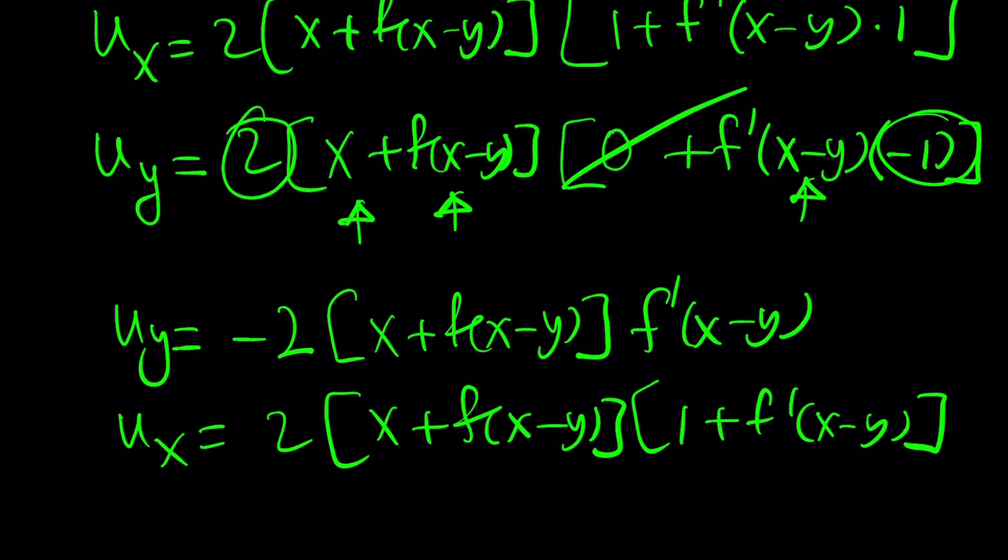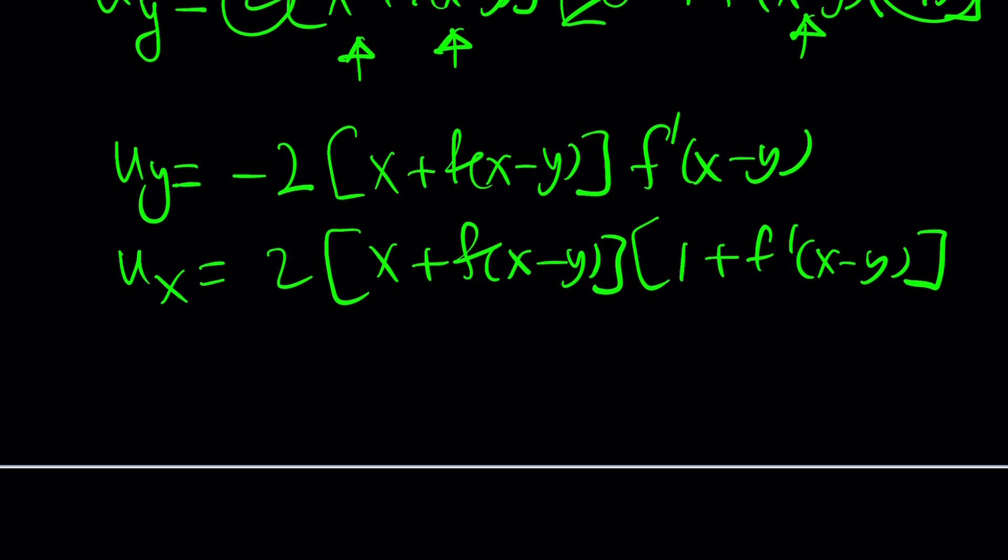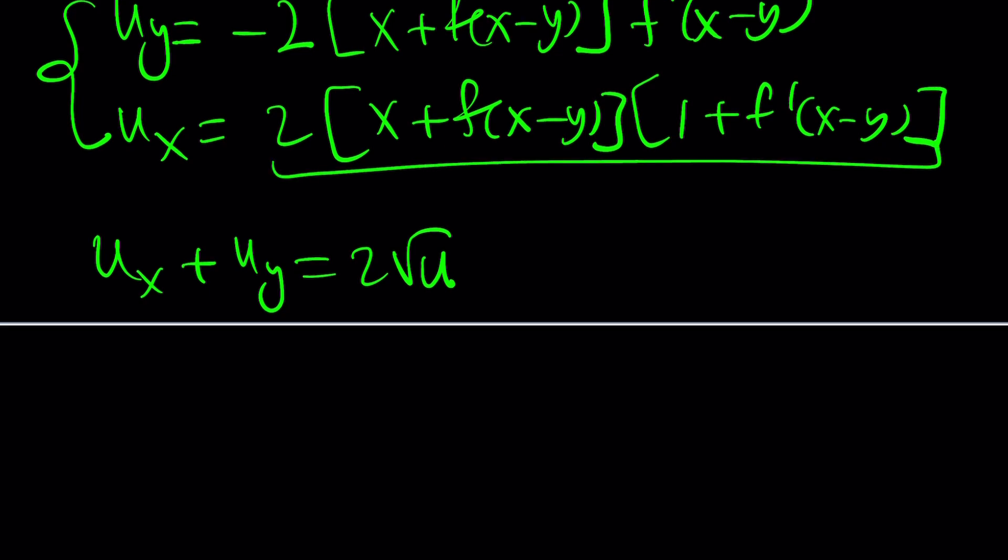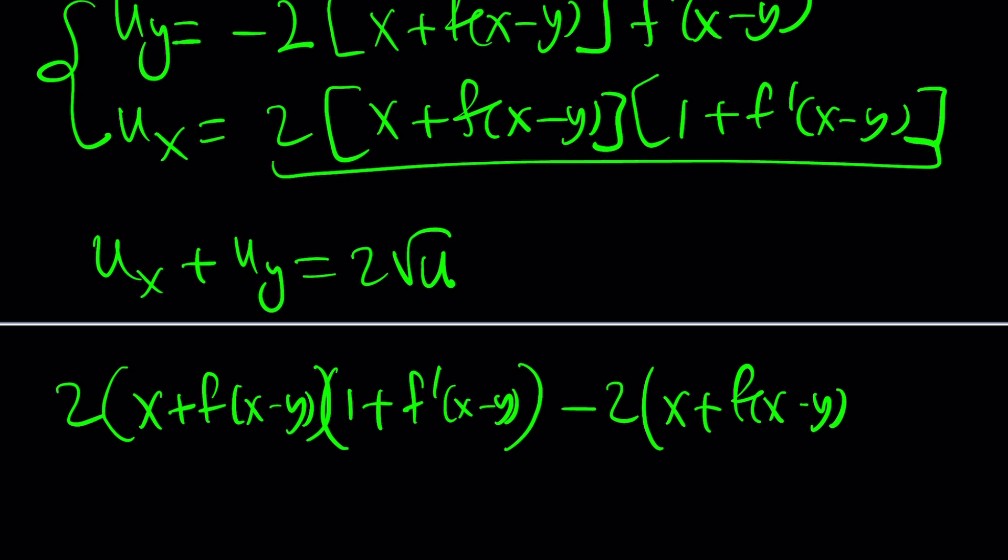Now, remember, the next thing we need to do to check our work is to add them. Because remember, the original problem said u sub x plus u sub y is supposed to equal 2 root u. Is that going to happen? Seriously? Let's go ahead and add these up. To add these, I'm going to add this first. So, 2 times x plus f of x minus y times 1 plus f prime of x minus y plus, and there's a minus sign because that's a negative, right? So, minus 2 times x plus f of x minus y times f prime of x minus y. Great.